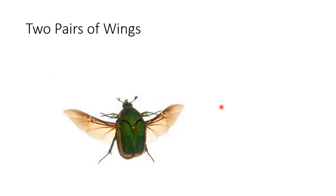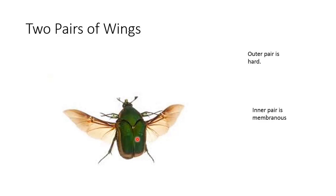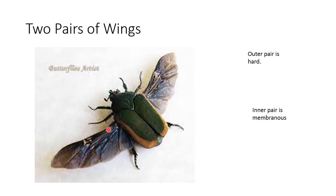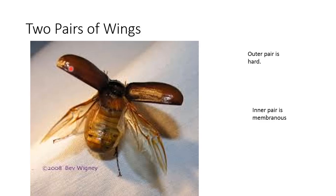The thing that classifies June bugs is that they have two pairs of wings. They have a hard outer shell called an elytra, which is this right here. And then underneath that they have membranous wings — like a ladybug, these kind of open and then the membranous wings are underneath. Here you can actually see the outer elytra wings pulled up and the membranous wings underneath.